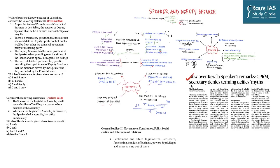Now after this discussion, go back and read the newspaper articles — do they make more sense? The next article is very important from the perspective of the prelims polity section: 'Row over Kerala Speaker's remarks — CPI(M) secretary denies terming deities myth.' The ruling Communist Party of India (Marxist) in Kerala scrambled to defend itself against accusations amplified on social media that top party leaders broadcast a disdainful view of Hindu beliefs while not daring to question the articles of faith of other religions.